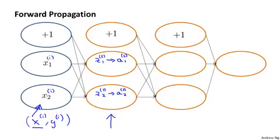And then we forward propagate again to get z31, apply the sigmoid or the logistic function, the activation function to that to get a31. And similarly, like so. Until we get z41, apply the activation function. This gives us a41, which is the final output value of the neural network.